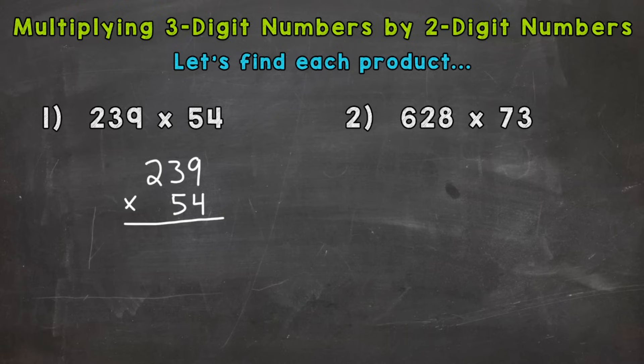And then the two is lined up with nothing below that because 54 doesn't have a digit in the hundreds place. So now that we're lined up, we're ready to multiply. And what we're going to do, we're going to do four times 239 and then 50 times 239. And we're doing 50 because the five in 54 has a value of 50.